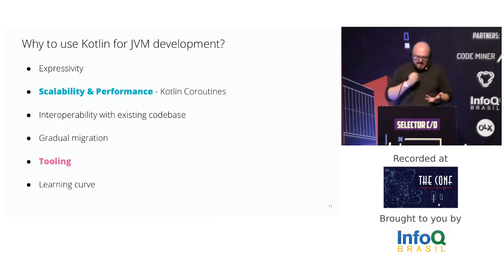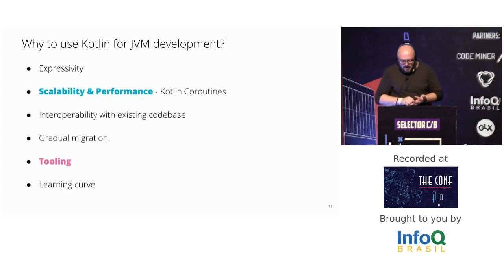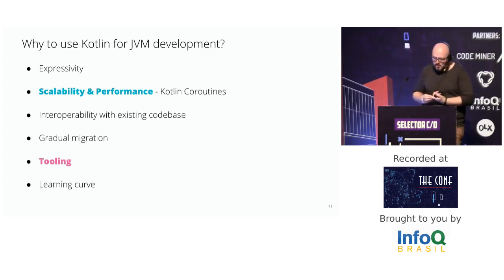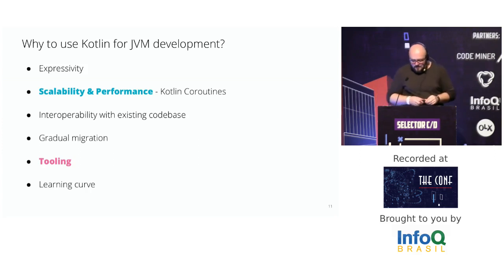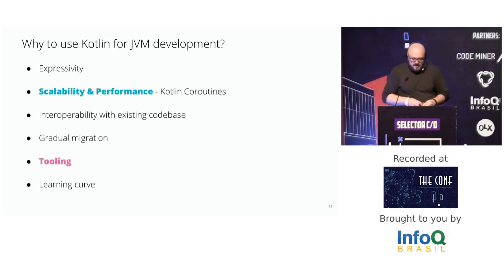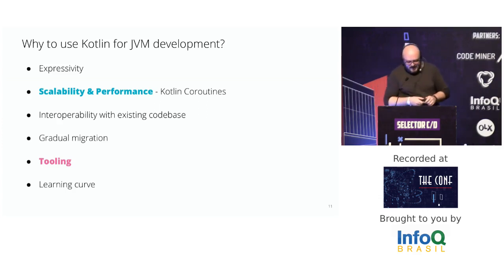Kotlin is an excellent choice when developing for the JVM. Kotlin's expressivity is undoubtedly a lot better compared to Java — you not only avoid writing boilerplate code, but the Kotlin code makes your intentions more explicit. Performance and scalability are major concerns when choosing a language for back-end development. An example of how Kotlin helps here is the use of coroutines — a mechanism for asynchronous programming similar to async/await patterns from other languages, and your async code will be more readable and perform better than using threads.